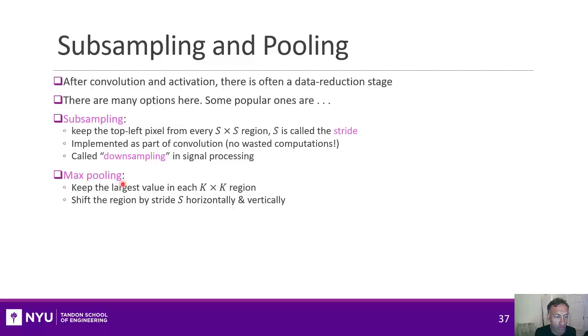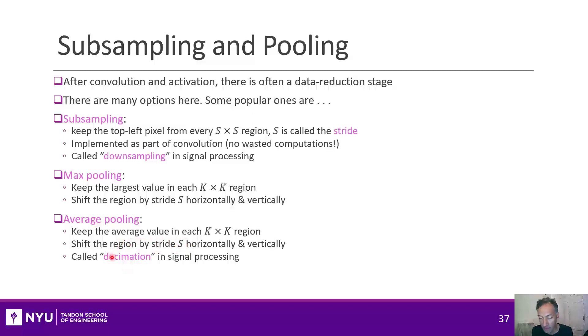A related method is called average pooling. And you compute some average in each k-by-k region and then stride over. This is sometimes called decimation in signal processing. And then what happens is either that the subsampling or max pooling or average pooling is applied on a per-channel basis.